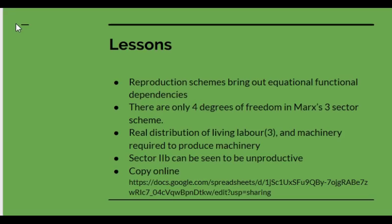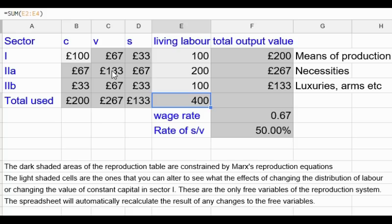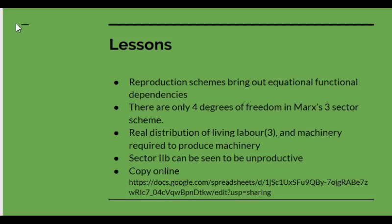What have we learned from this? First, reproduction schemes bring out functional dependencies between sectors of the economy — dependencies which are not always obvious. Second, there are a limited number of degrees of freedom in Marx's three-sector scheme: the four degrees of freedom are the real distribution of living labour between the three sectors and the machinery required to produce machinery. You can use the reproduction schemes to understand the production of relative surplus value and to see that sector 2B must be unproductive.